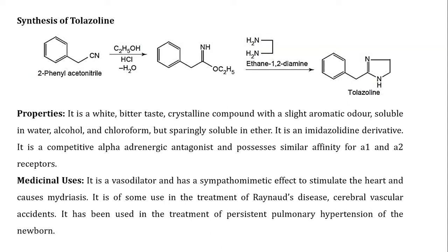Properties of tolazoline: it is a white, bitter-tasting crystalline powder with a slightly aromatic odor, soluble in water, alcohol, and chloroform, but sparingly soluble in ether. It is an imidazoline derivative and a competitive alpha adrenergic antagonist with similar affinity for alpha-2 receptors. Medicinal uses: it is a vasodilator and has a sympathetic effect to stimulate the heart. It is used in the treatment of Raynaud's disease, cerebral vascular accidents, and persistent pulmonary hypertension of the newborn.